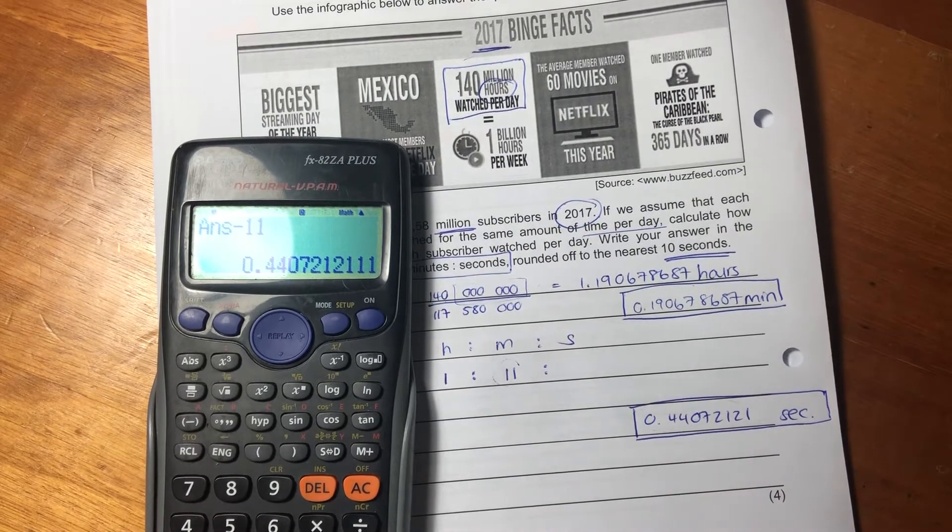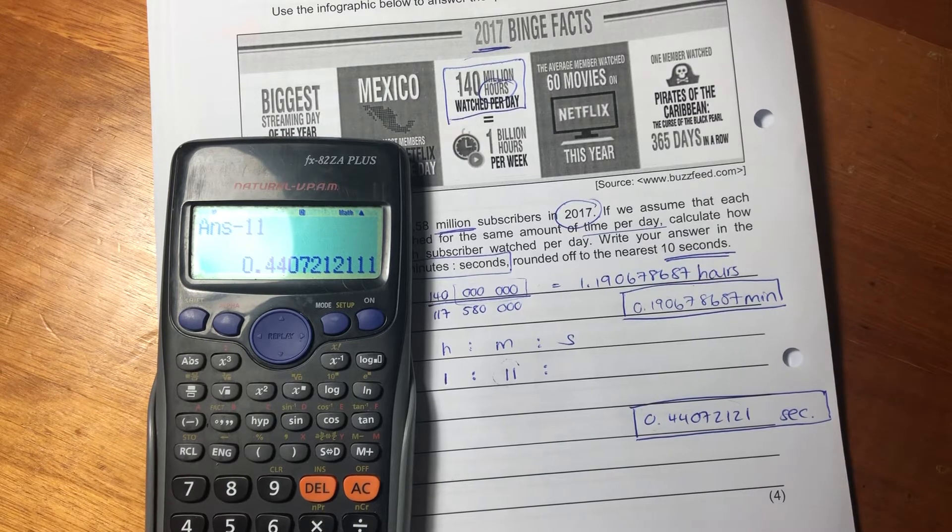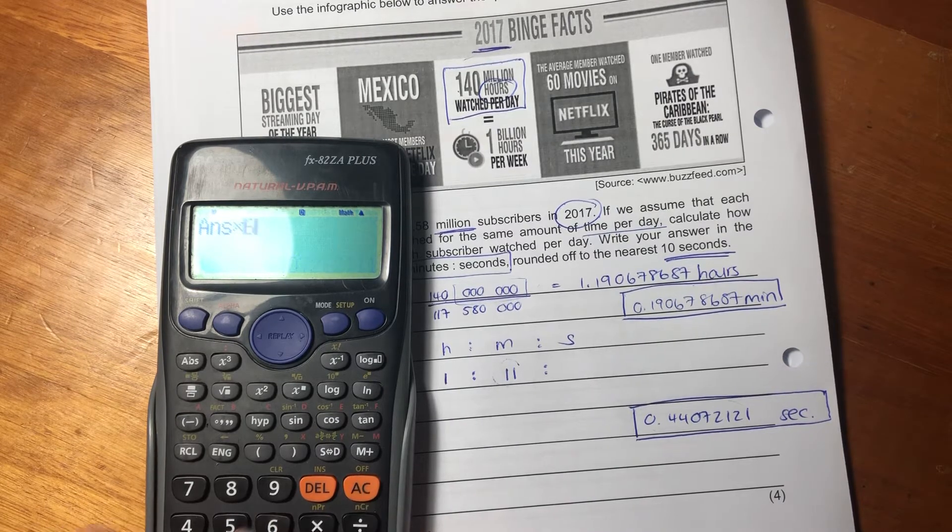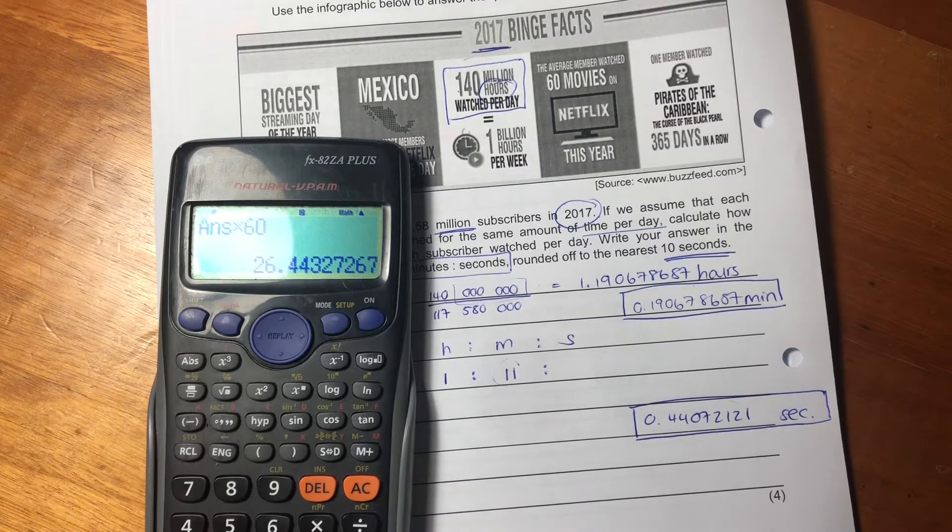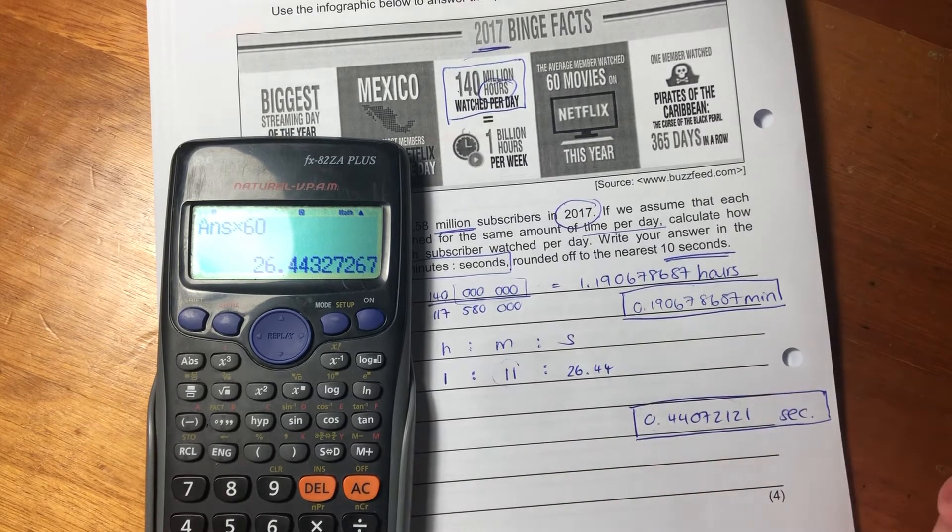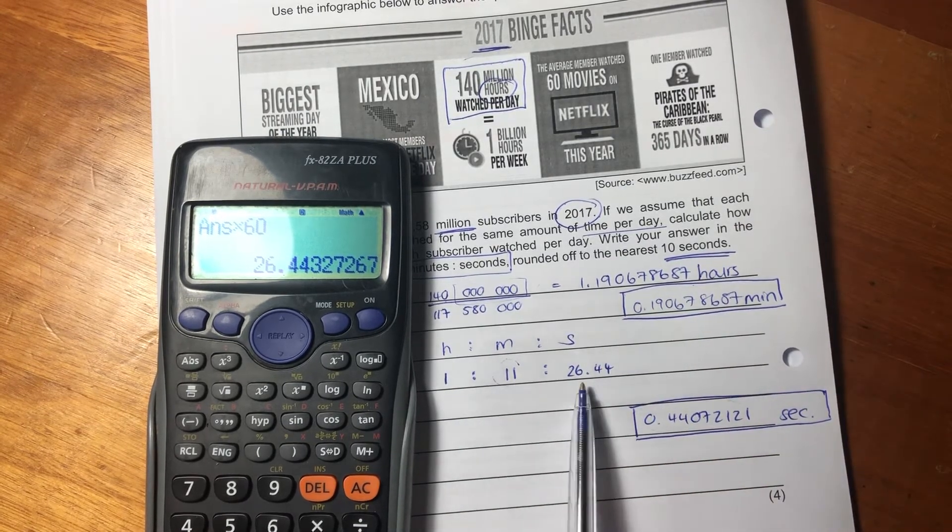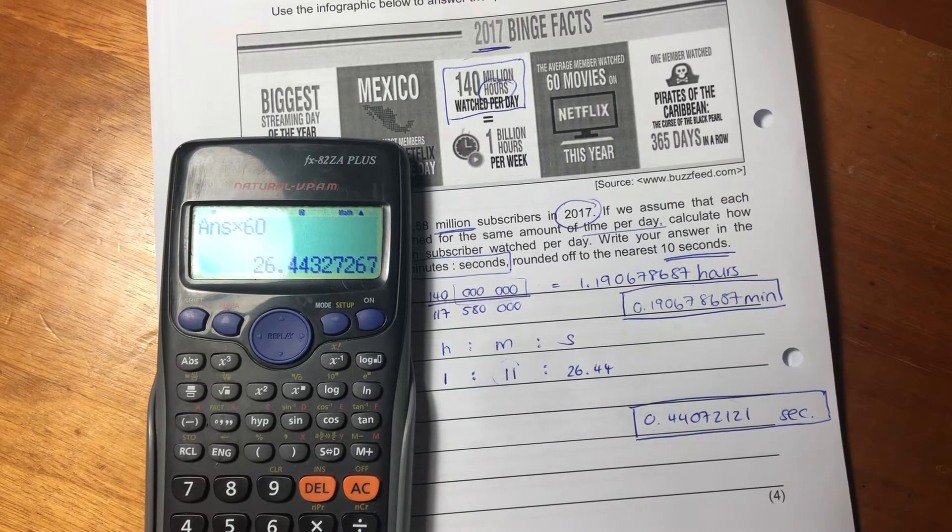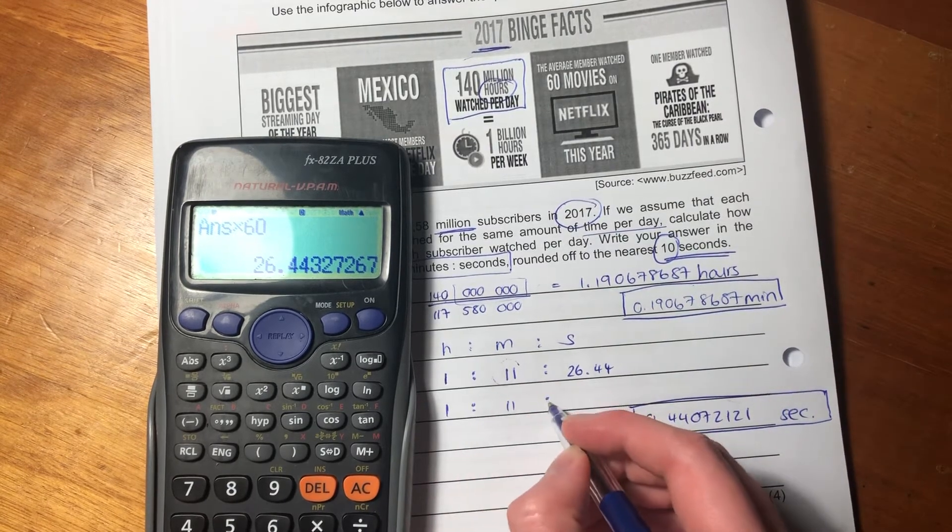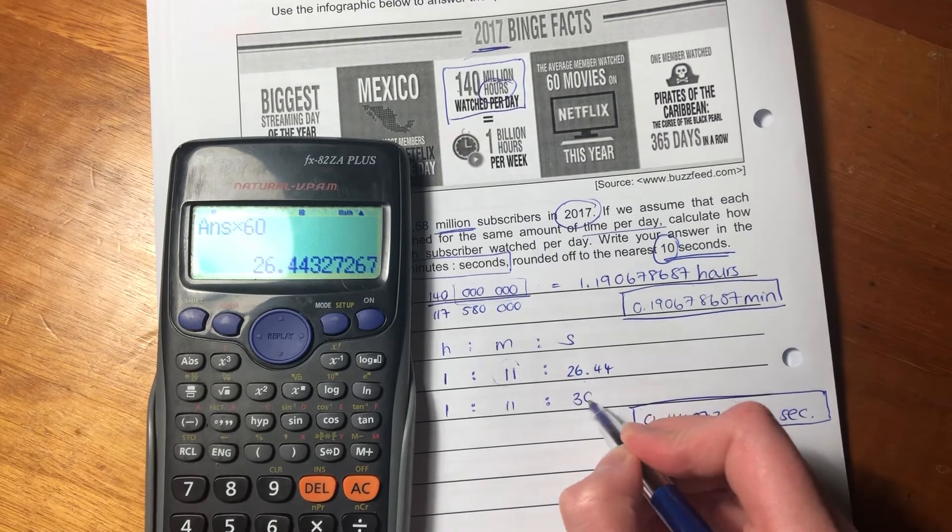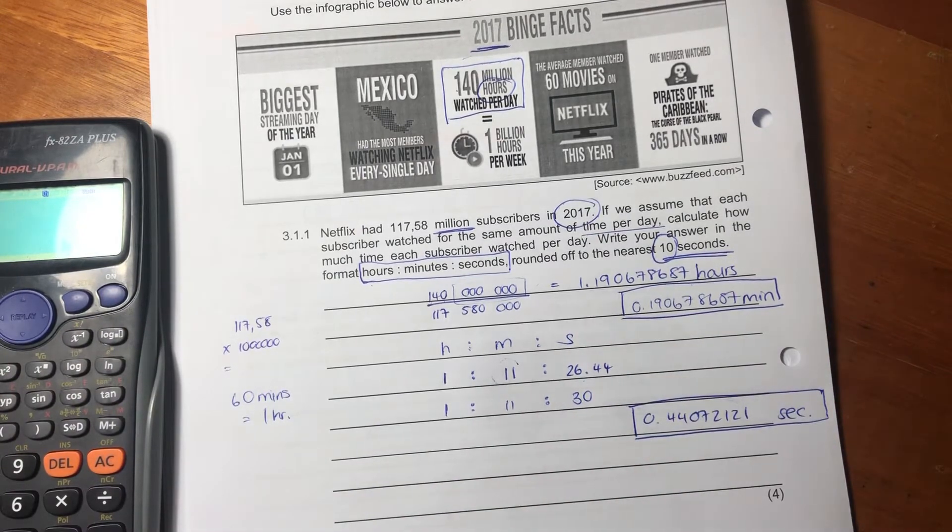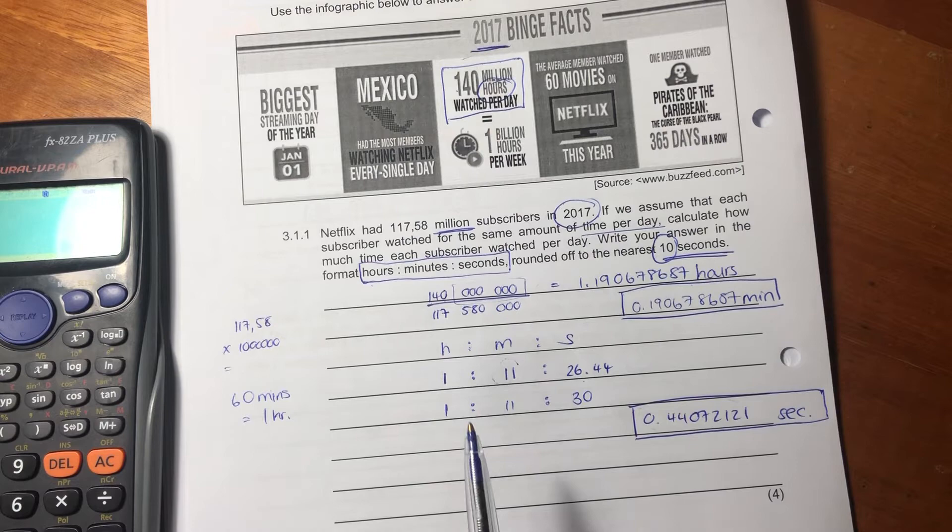Now, how many seconds are there in a minute? 60 seconds in a minute, isn't there? So we're going to times by 60 to figure out how many seconds it is. So it says it's 26.44 seconds. So it's one hour, 11 minutes, and 26.44 seconds. But we have not fully answered the question. It says round it off to the nearest 10 seconds. So these stay the same, but we need to round this off. And we round it off to 30, because it's closer to 30 than it is to 20. And that is your final answer.